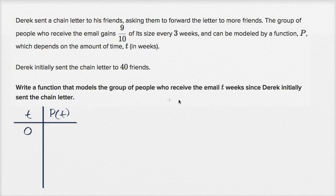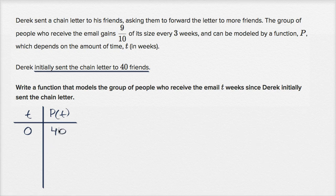So when t is zero, when it's been zero weeks since Derek initially sent the chain letter, how many people have gotten it? Well, they tell us Derek initially sent the chain letter to 40 friends. So at t equals zero, p of zero is 40.